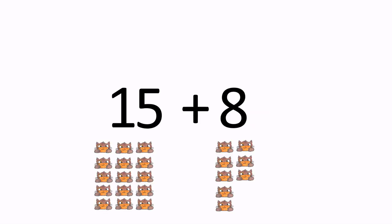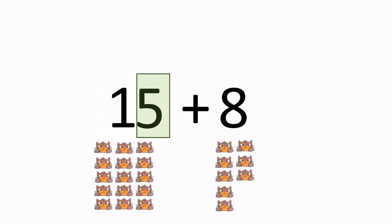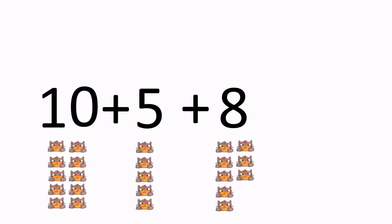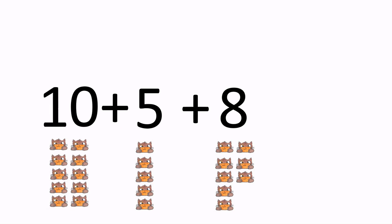Before we start counting, let's think about what the numbers mean. The first number is 15. It means that we have 10 elements, as 1 is in the tens place, and then we have 5 elements more, as 5 is in the ones place. Now we have 10 plus 5 plus 8. Can we make it simpler?